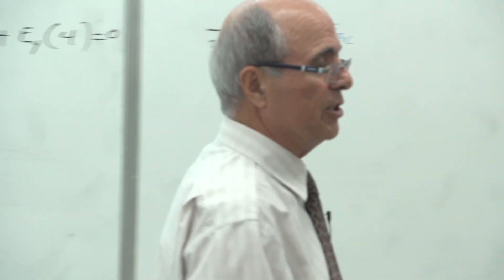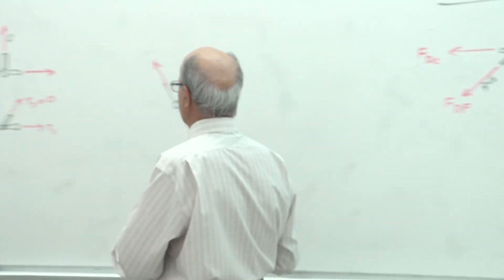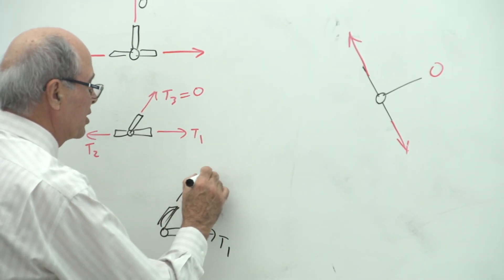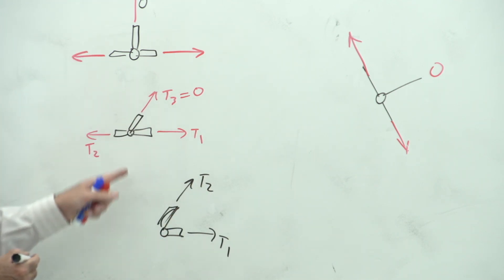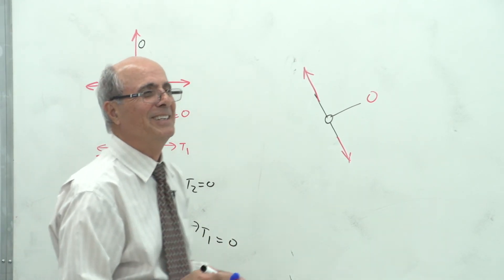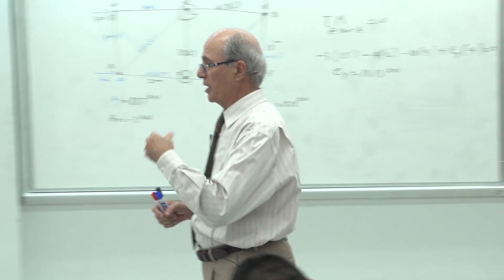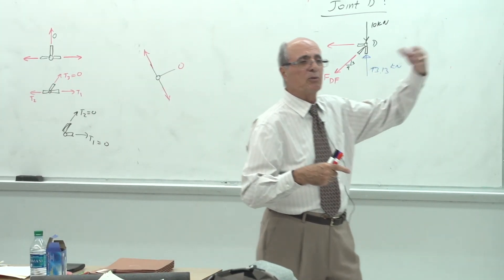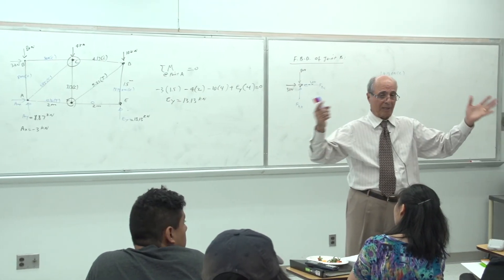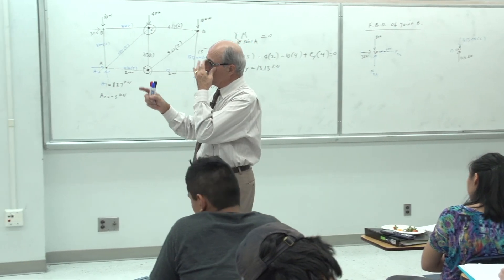Final zero-force case: a joint with two members T1 and T2 meeting at a right angle, no external load. T2 must equal zero because there is nothing to balance its direction, and then T1 must also equal zero. If your truss is symmetrical in both loading and geometry, you only need to analyze half of it. Otherwise, analyze all joints. This is all called the Method of Joints.